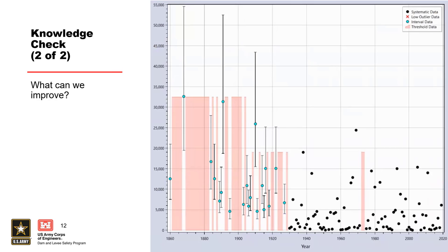Here is another knowledge checkpoint. Examine this plot. What do you notice about the picture, and how could we fix it? It would be a best practice to use fewer perception thresholds to represent this period of missing data. Include flow intervals to represent the largest historical flood events. Consider using systematic data for historic floods that are similar in size to other systematic data. And of course, perform sensitivity analysis.